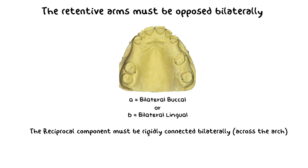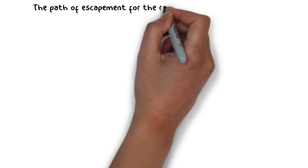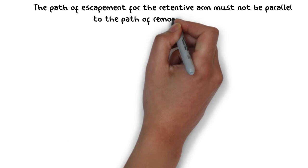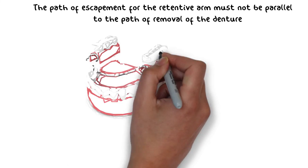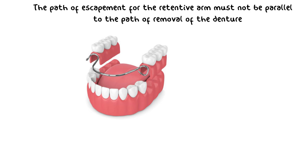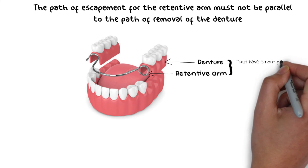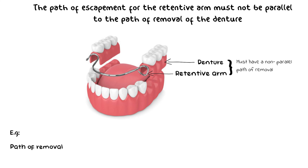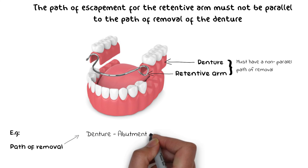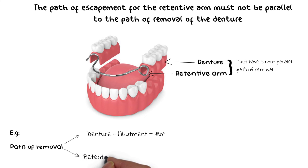To provide effective retention, the path of escape of the retentive arm must not be parallel to the path of removal of the denture. The retentive arm must have a path of removal that is not parallel or in line with the path of removal of the denture — both must have a non-paralleling path of removal. For example, if the denture is removed at approximately 180 degrees from the tooth, then the retentive arm must have a path of removal either greater than or less than 180 degrees, achieving clasp engagement that gives retention through deformation.